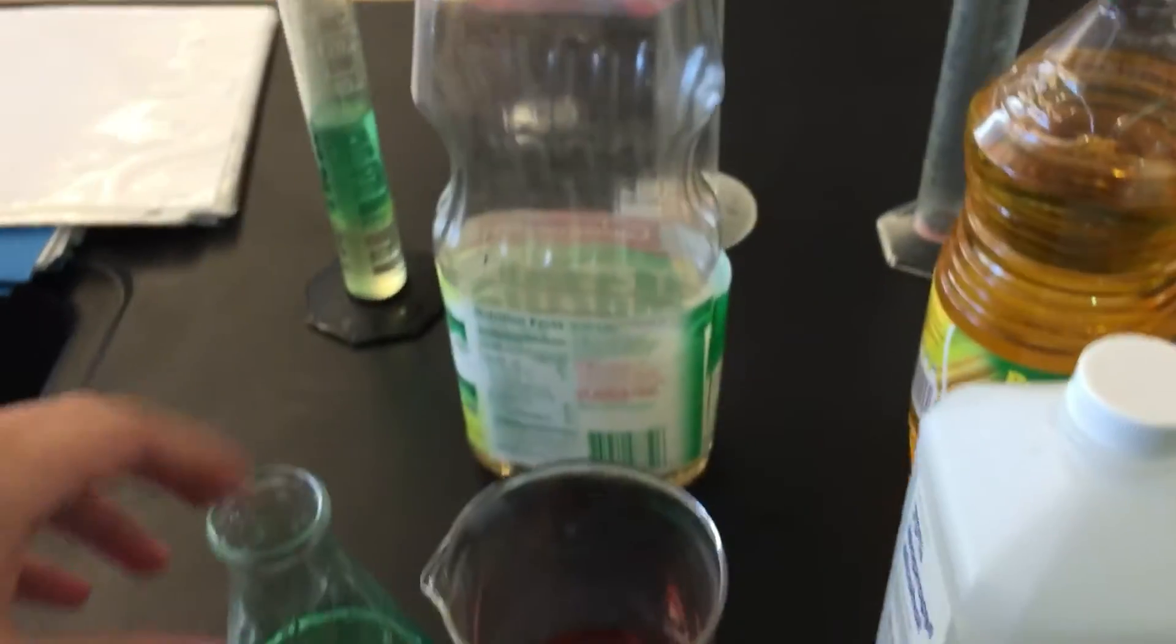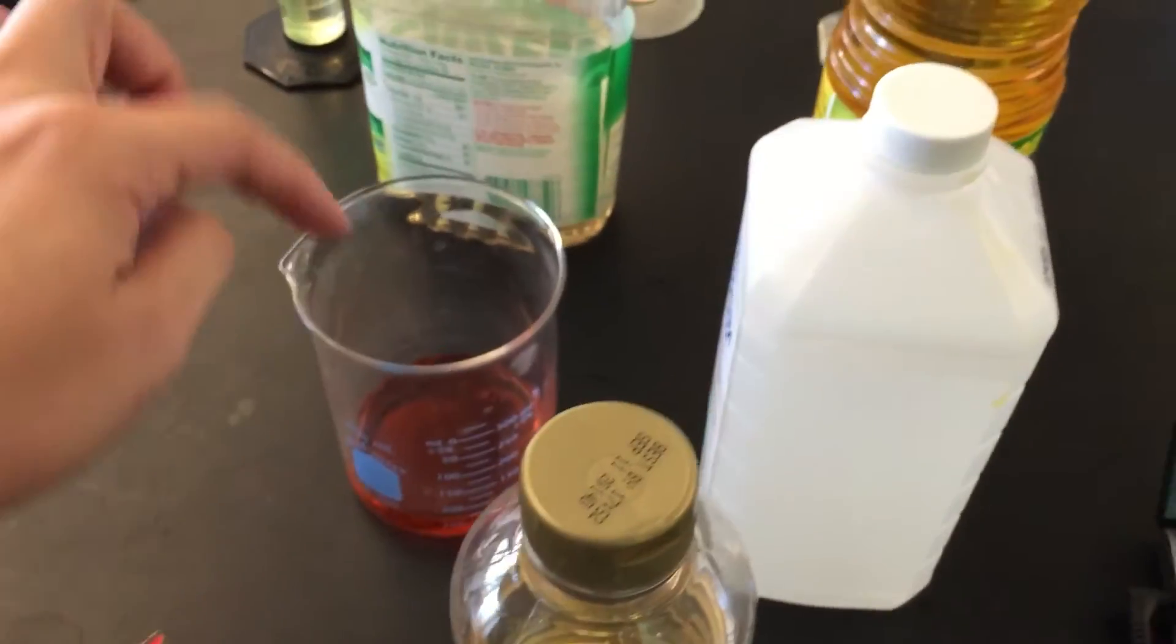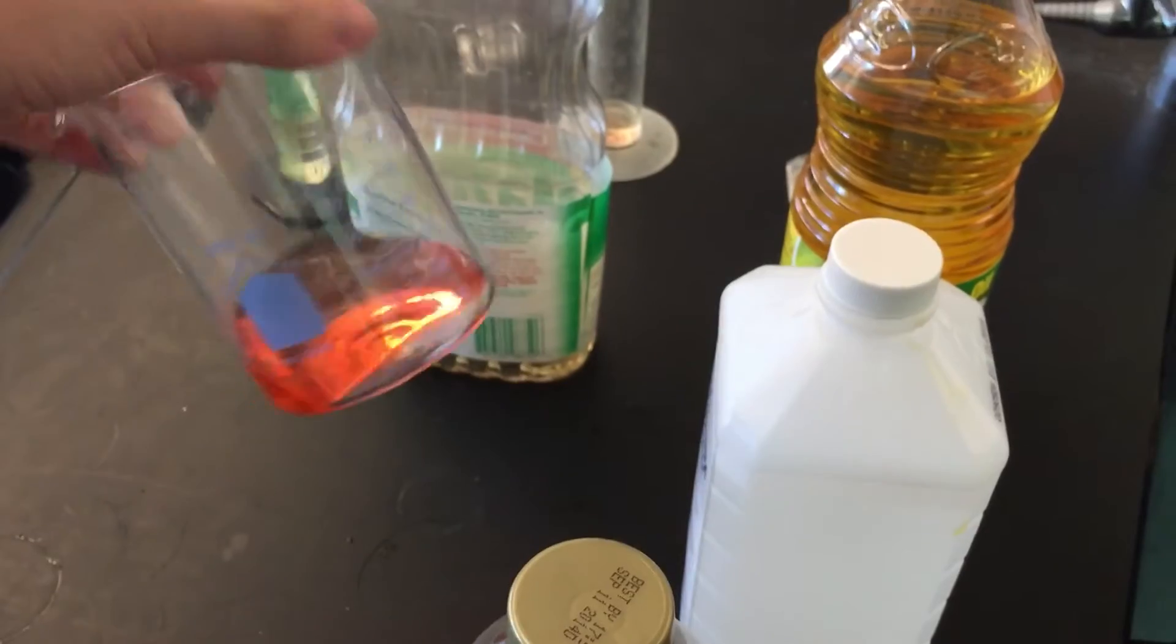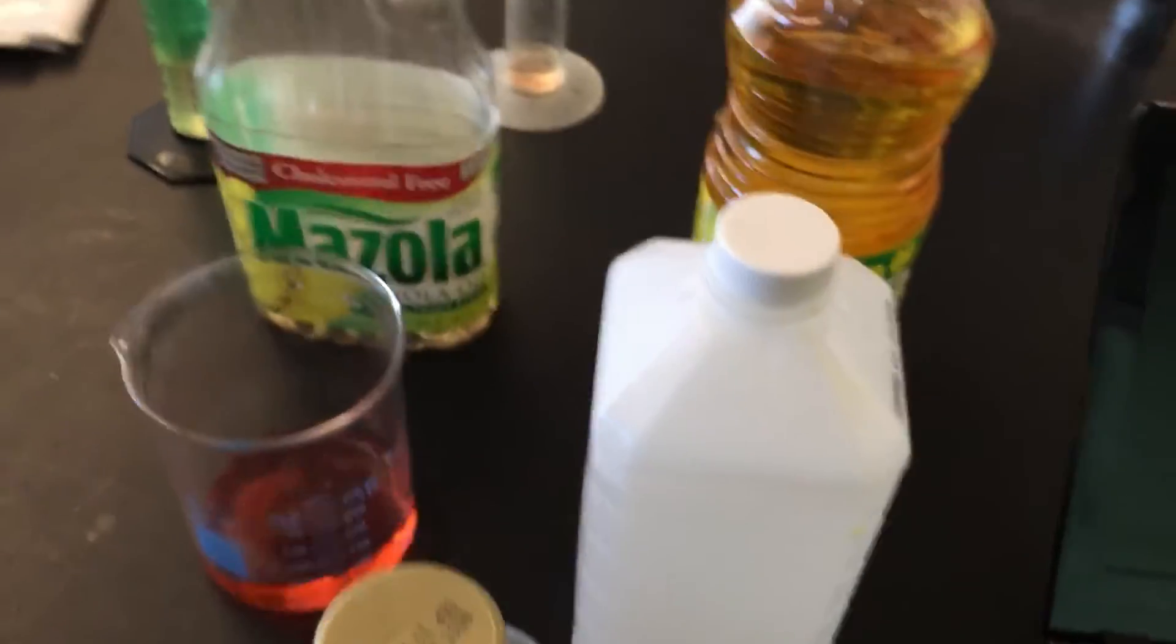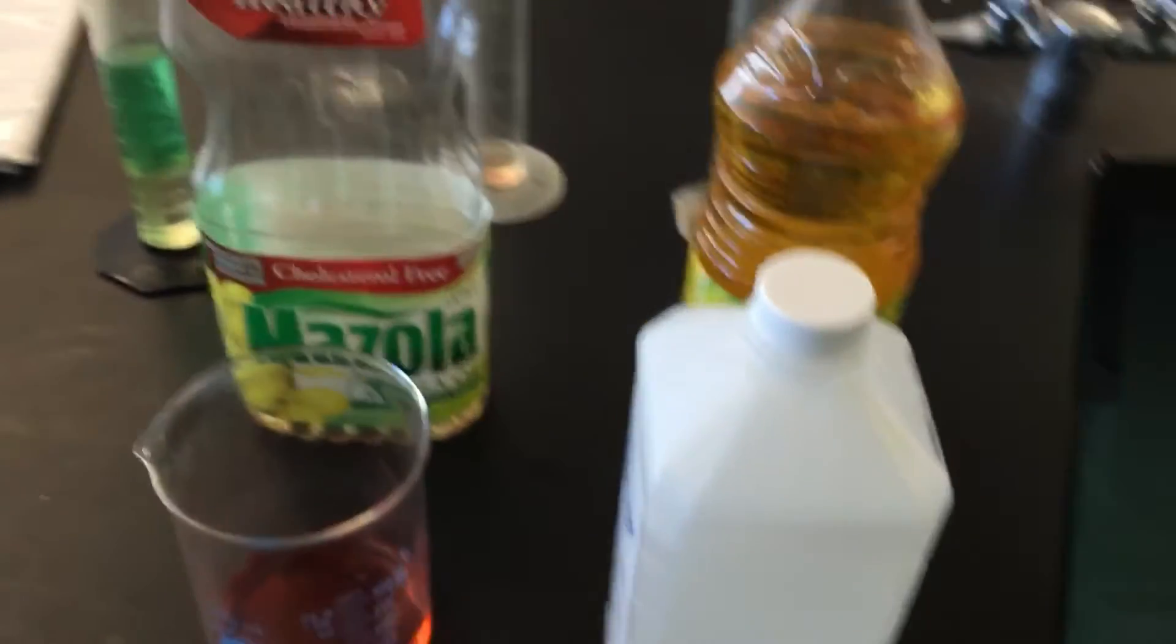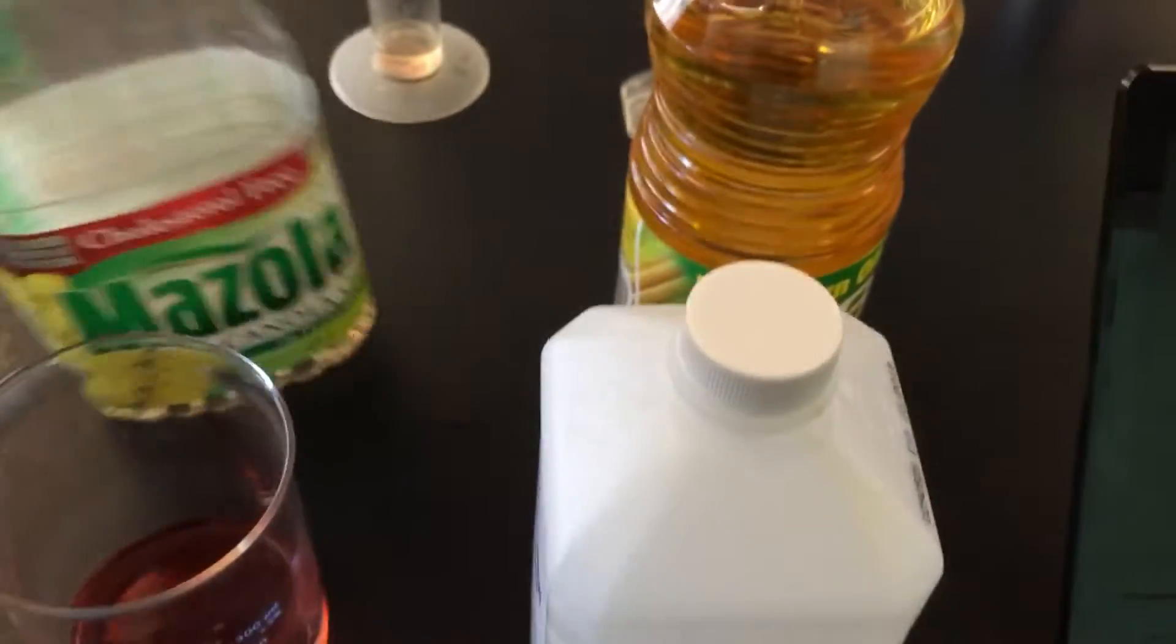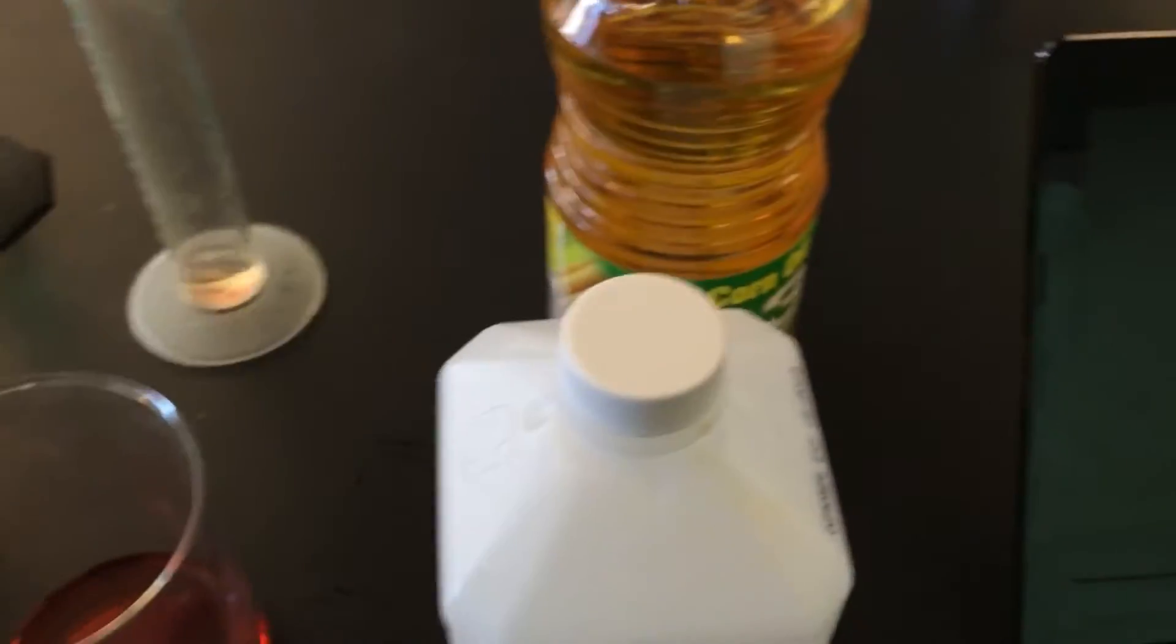All right, for the second mixture, let me move these out of the way. For the second mixture I have regular water, which I've dyed kind of green, and then I have canola oil. And so I'm going to mix those two together and we'll see which one sinks or floats.